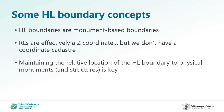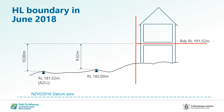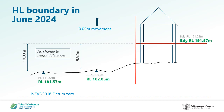Here we have Mount Albert number 3, code A2LL, and the height limited boundary surveyed in June 2018. Mount Albert has an RL of 181.52 metres. Inconveniently, the height limited boundary was defined 10 metres above this, with an RL of 191.52 metres. Now we are redefining the height limited boundary in June 2024, and we need to hold the relationship between the marks and the height limited boundary, keeping the boundary in the same place relative to the building floor slab.